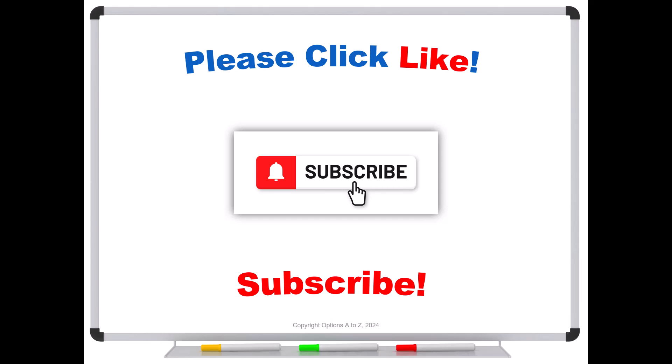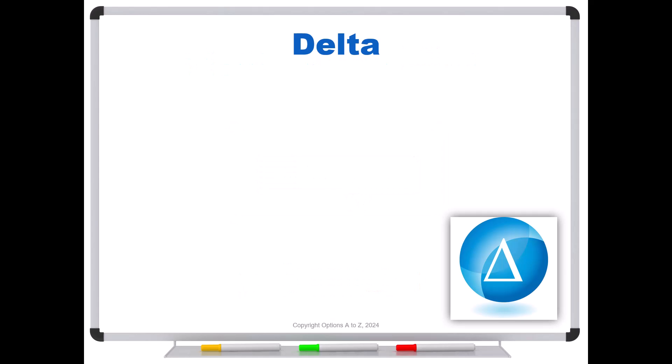So quick review of delta. Remember that there's a lot of these different Greeks that are sensitivity measures for our options. And delta is the options sensitivity for a $1 change in the stock's price. And that's generally speaking, because technically speaking,